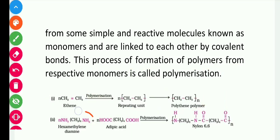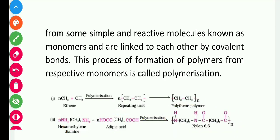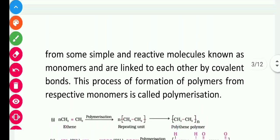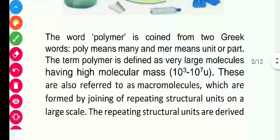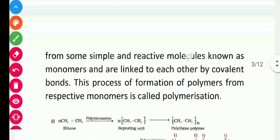You can also take two more examples. Hexamethyldiamine and adipic acid — both together polymerize to give us nylon 6-6, which is a polymer. But these two starting materials are called monomers. So polymer is coined from the two Greek words: poly means many, and mon means unit or part.